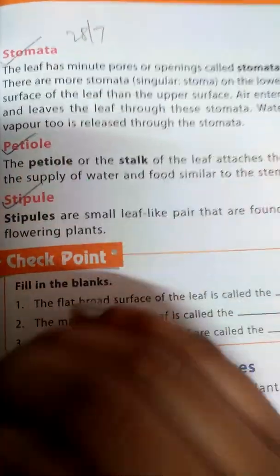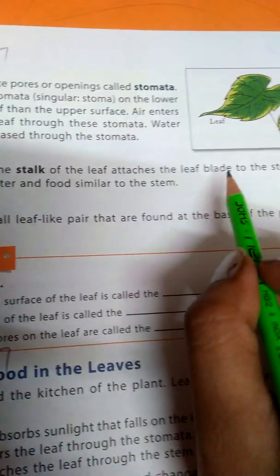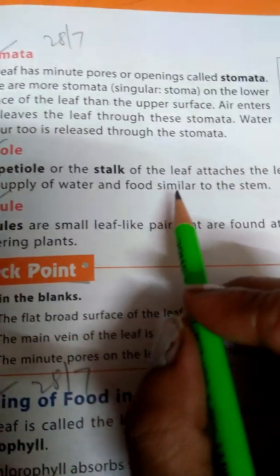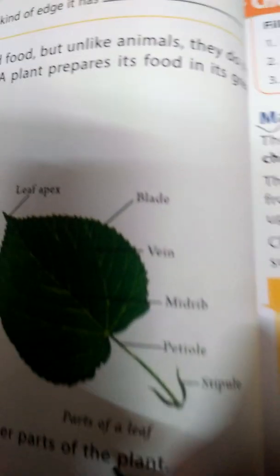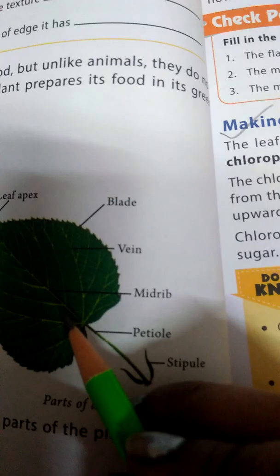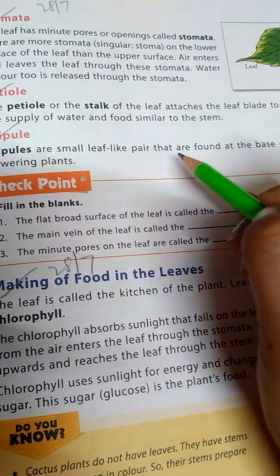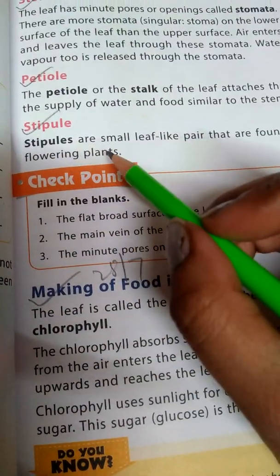Next is petiole. The petiole, or stalk of the leaf, attaches the leaf blade to the stem and helps in the supply of water and food, similar to the stem. This part here is called the petiole — through it, the leaf is connected to the plant. Next is stipule. Stipules are small leaf-like structures found at the base of the petiole of many flowering plants.